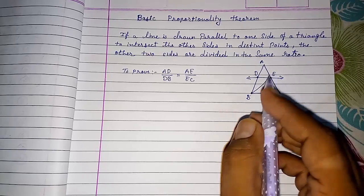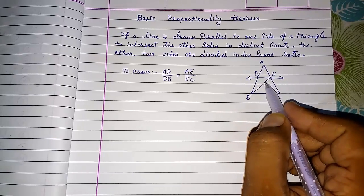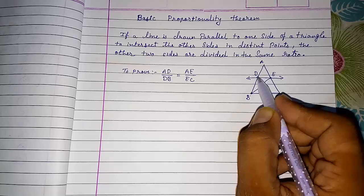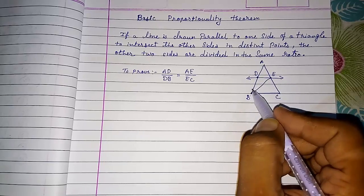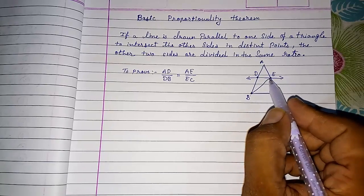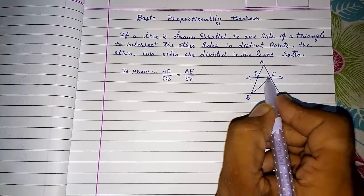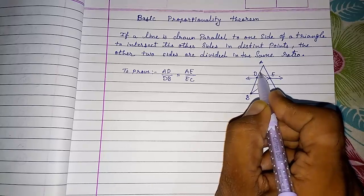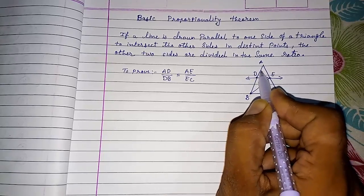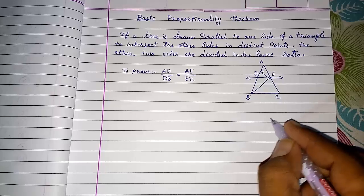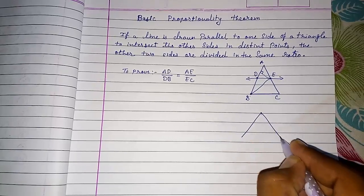We come to know where will be the height of this triangle. Whenever a triangle is obtuse angle triangle, we are getting the height of that triangle outside that triangle. Means if I am drawing this height, again I am making this triangle so that you come to know.